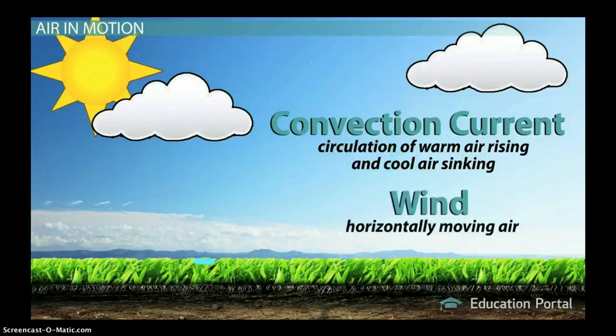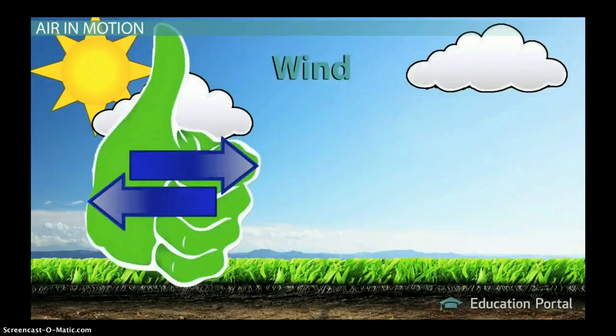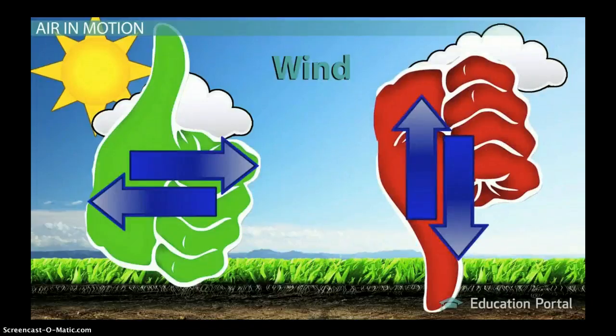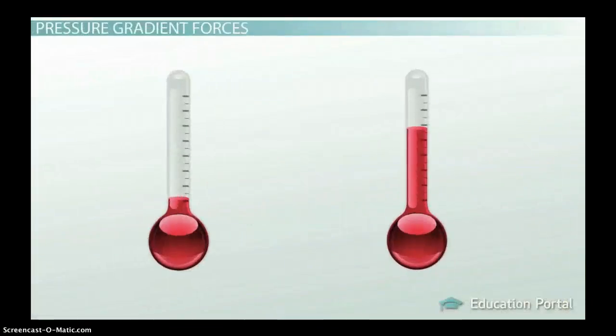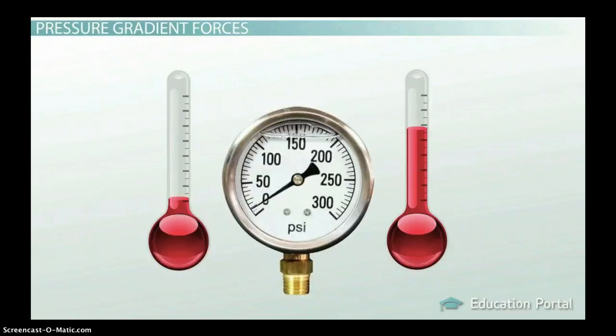Wind is horizontally moving air, so any air that moves left to right instead of up and down. Wind ultimately comes from temperature differences because as we learned in another lesson, temperature differences lead to air pressure differences, and air pressure creates convection currents, which as we just learned, create wind.